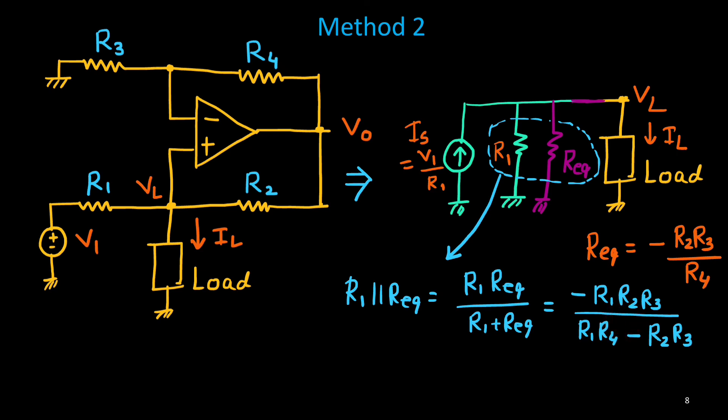Now, our objective is to get IL, which is independent of VL. So, if this will happen, if this combination will draw zero current. No current is drawn by this circuit. So, total whole current, IS, should flow to the load. In that case, it will be independent of the load. That implies that, that resistance combination R1 equivalent, R1 parallel to R equivalent. This one should give infinite impedance.